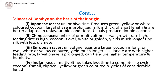Japanese races usually produce double cocoons. Chinese races: they are univoltine, bivoltine or multivoltine. Larval growth rate is high. Feeding rate is high. Cocoon is oval in shape, white or golden in color. They yield much longer, fine silk with less diameter.